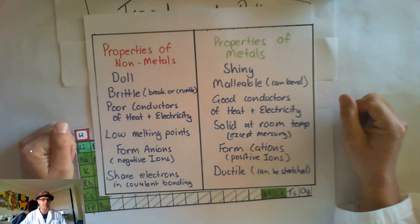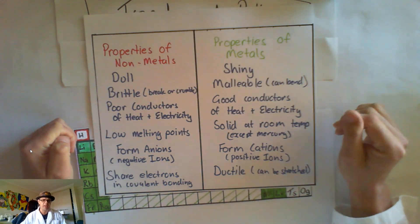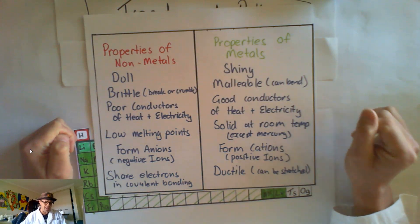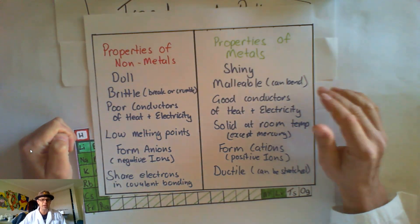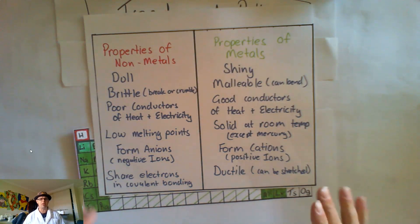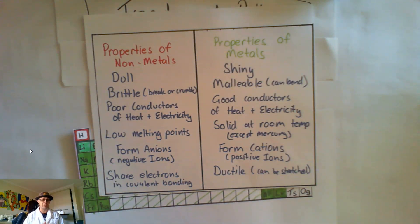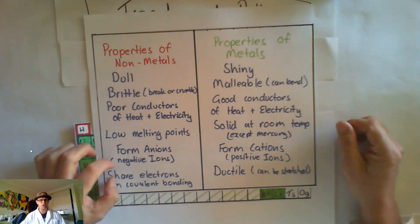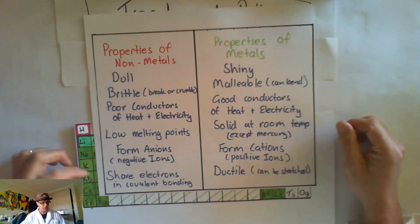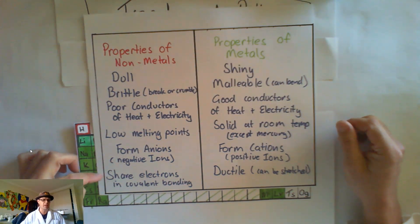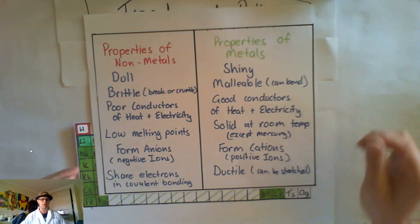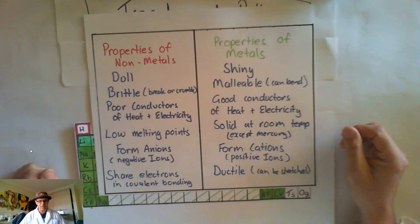Non-metals have low melting points, so it doesn't take a high temperature to melt them. They form anions — negative ions. Whenever you're talking about a negative ion, you'll call it an anion. And they share electrons in covalent bonding. In ionic bonding, atoms give away or take on electrons, but non-metals, when they come together, will actually share electrons.